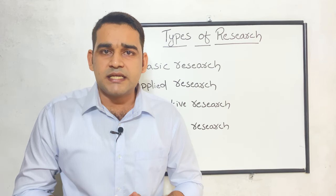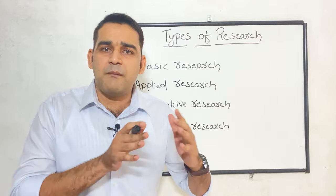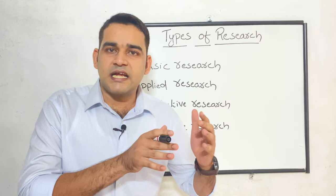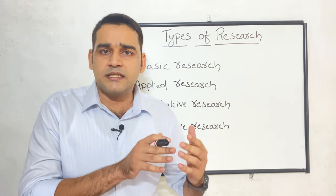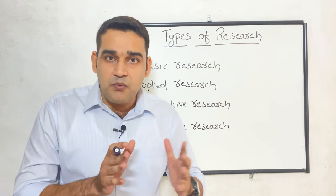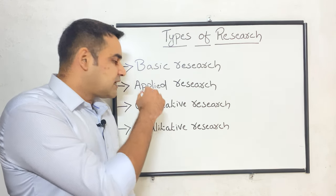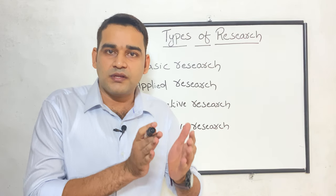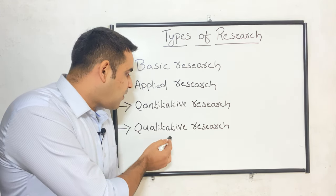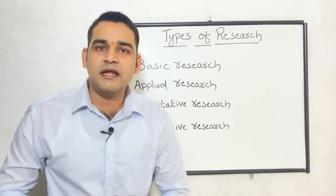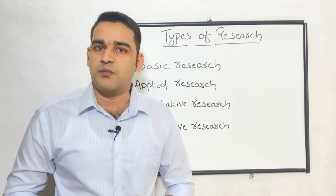In quantitative research, the classification is experimental and non-experimental. In non-experimental, you can see exploratory research, descriptive, comparative, and correlational research. In other books you may see these listed differently depending on the author, but they are the classifications coming under quantitative and qualitative research. That is all regarding the types of research. We will meet soon with another video. Thank you and goodbye.